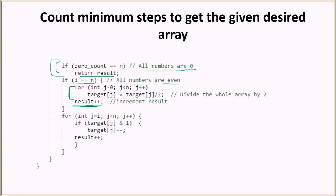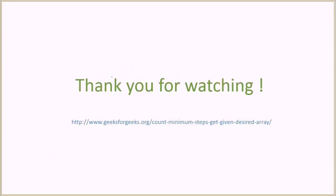Then we run another loop to handle odd elements: for each odd element we do target[j]-- and increment the result variable. Eventually zero_count will equal n and we return the final result value. That is all for this algorithm — you can visit the provided link to find the full code and run it yourself. Thank you for watching.